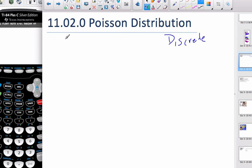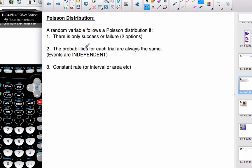The Poisson is similar to the binomial, but here are the conditions. Again, we have success or failure. The probabilities from trial to trial are always the same, so events are independent. But this time it's a constant rate over an interval or area.